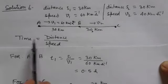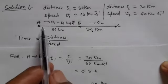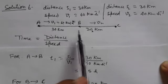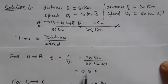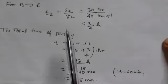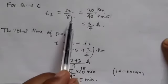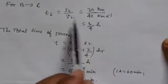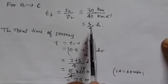First, we find time equals distance divided by speed. For A to B, time T1 equals 30 divided by 60, which gives 0.5 hours. For B to C, time T2 equals 30 divided by 40, which gives 3 by 4 hours, i.e., 0.75 hours.